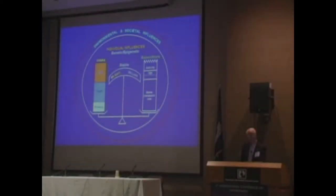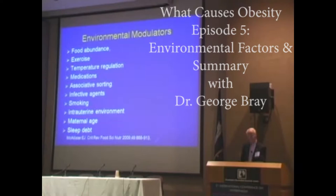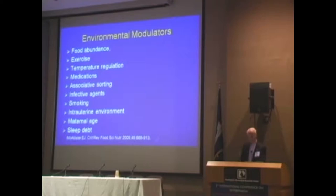Environmental modulators were the last part of this. There are a variety of them — this is the David Allison and McAllister's list: sleep debt, maternal age, intrauterine environment, maternal smoking, infective agents associated with assorting and matings, medications, temperature regulation, exercise, and food abundance.